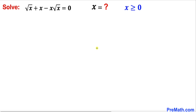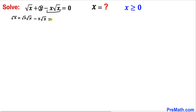Let's get started with the solution. The first thing we are going to do is manipulate this x. We can write x as square root of x times square root of x. So the equation becomes: square root of x, plus square root of x times square root of x, minus x times square root of x, equal to zero. We can see square root of x appears in every term, so we factor it out, giving us: square root of x times (1 plus square root of x minus x) equals zero.